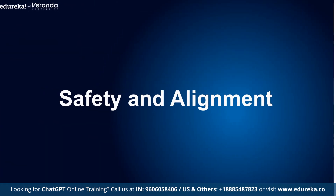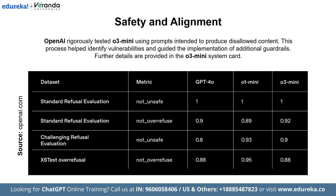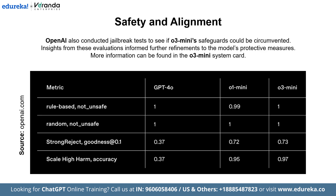Next is Safety and Alignment. Safety has always been a top priority for OpenAI. With O3 mini, one of the key innovations is the use of Deliberative Alignment — a technique that trains the model to evaluate human-written safety specifications before generating responses. This approach helps O3 mini handle challenging safety and jailbreak evaluations more efficiently than GPT-4o, while ensuring responses remain both accurate and secure. Extensive testing confirms that O3 mini meets rigorous safety standards.